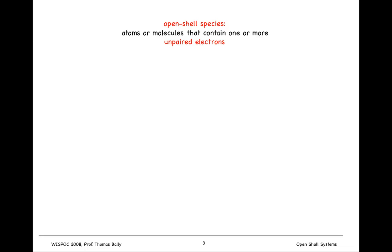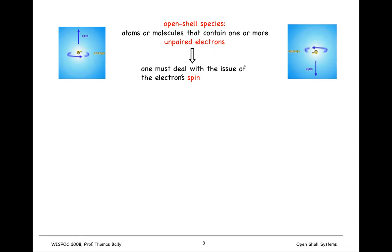And what is an open shell species? An atom or molecule containing one or more unpaired electrons, and that means that we now have to worry about the spin of the electron. Spin is an intrinsic property of electrons. It's not that they're actually spinning around in any way. Rather, it's named spin because it behaves in a way that has certain analogous behavior compared to spin in a macroscopic system.